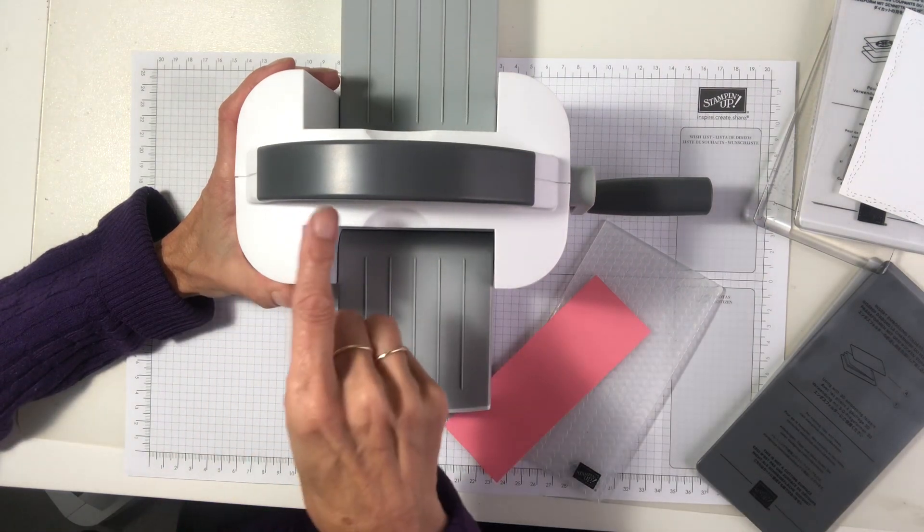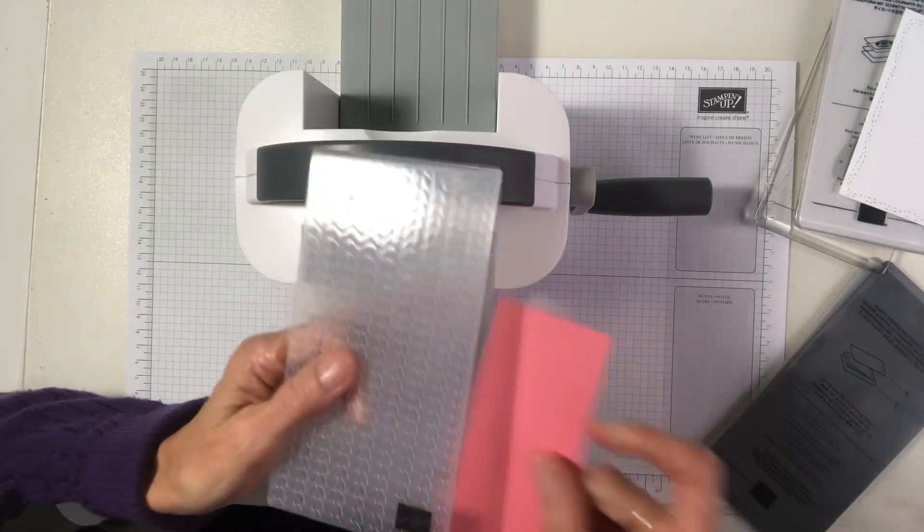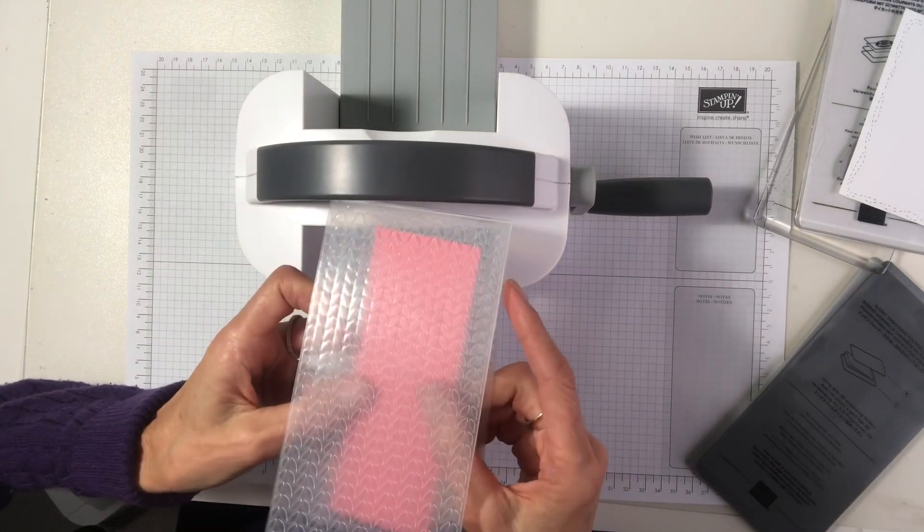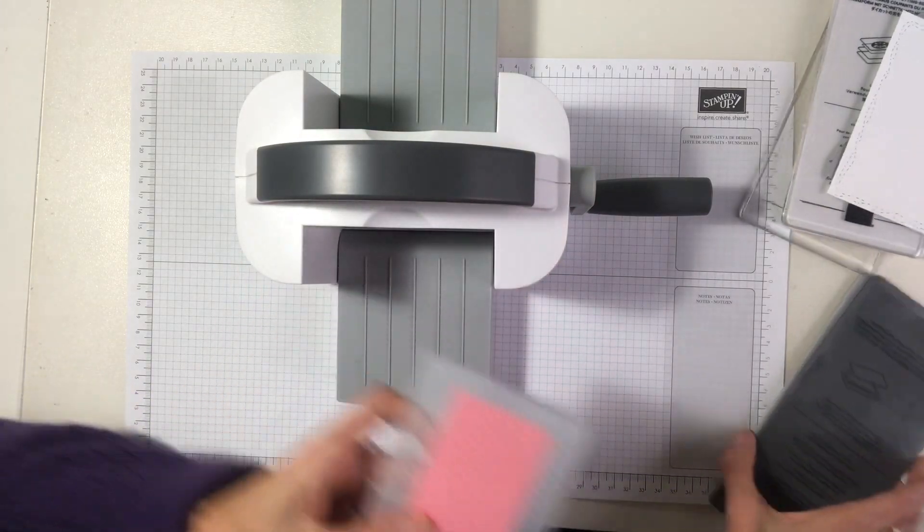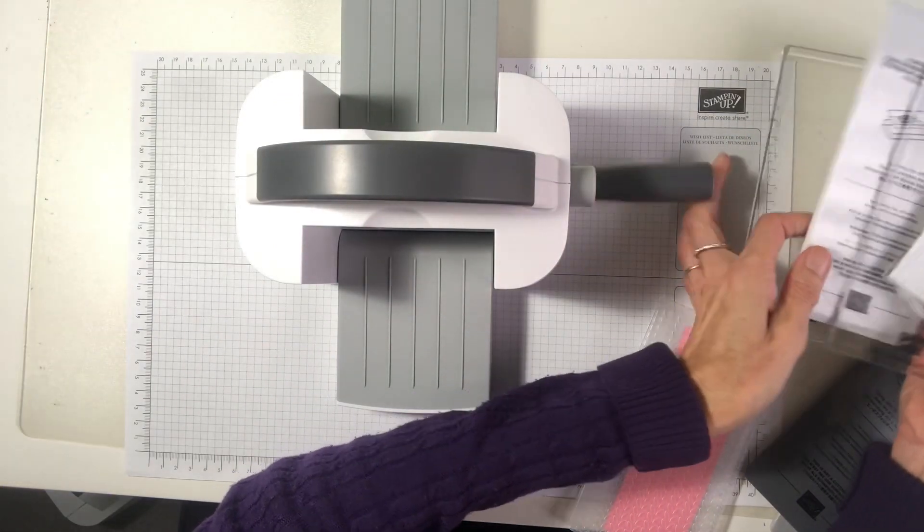So we're going to get an emboss now. So let's put our card in your embossing folder. And we're going to put it between your plates. So we'll bring in our main plate again. Another one.